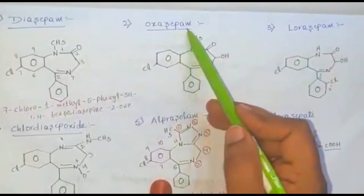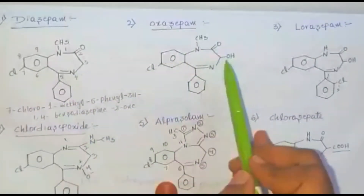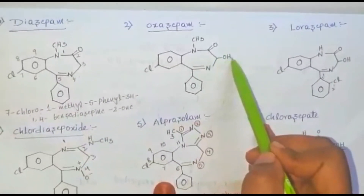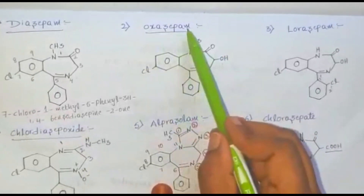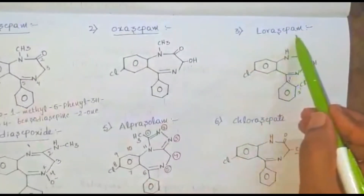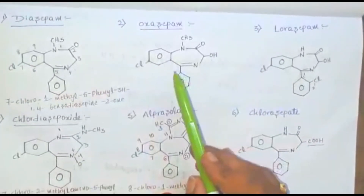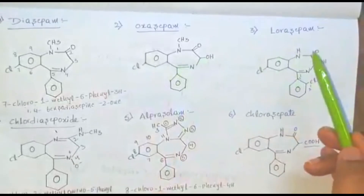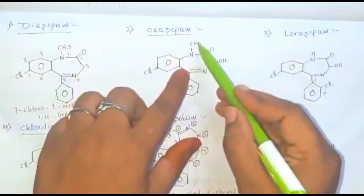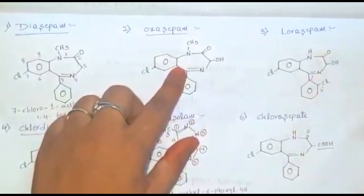Next, oxazepam: the difference between diazepam and oxazepam is that a hydroxy group is substituted at the third position — that is called oxazepam. Next, lorazepam: the difference between oxazepam and lorazepam is at the first position — oxazepam contains a methyl group and lorazepam contains hydrogen.